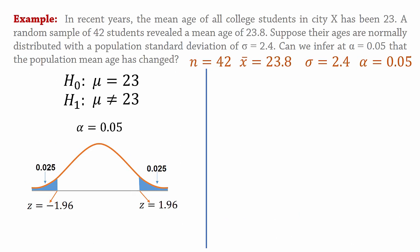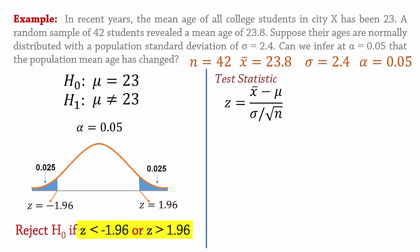So back to the hypothesis test. Based on the critical values found in the tables, we can set the decision rule as follows. Reject the null hypothesis if the test statistic based on this formula is less than negative 1.96 or if it is greater than positive 1.96.